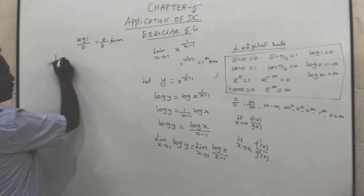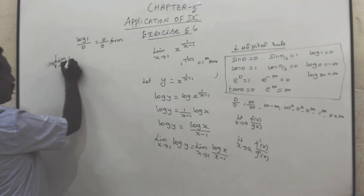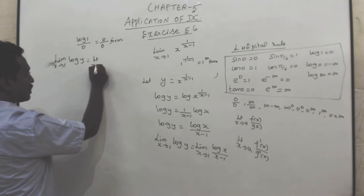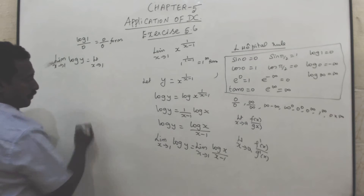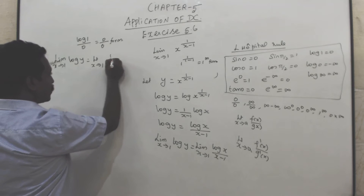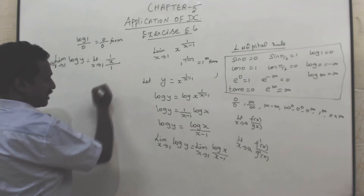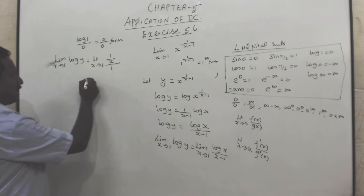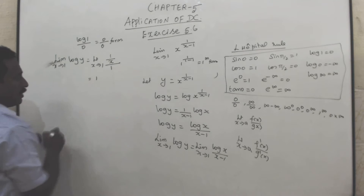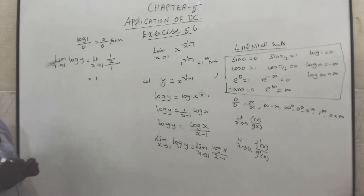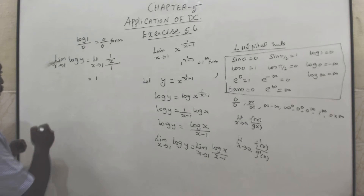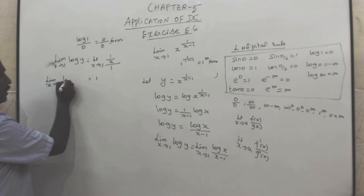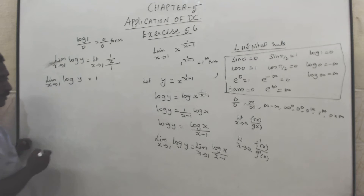Limit x tends to 1 of log y equals limit x tends to 1 of: differentiation of log x is 1 by x, and differentiation of x minus 1 is 1. When we substitute x equal to 1, we get 1 by 1 equal to 1. So limit x tends to 1 of log y equals 1.